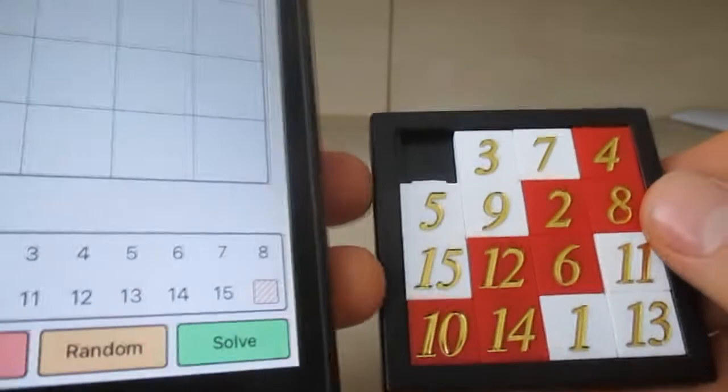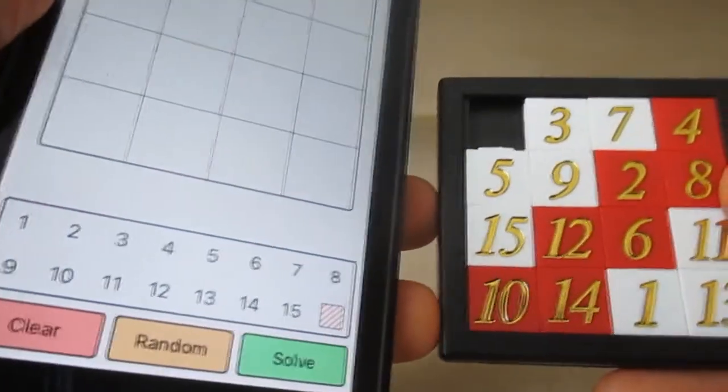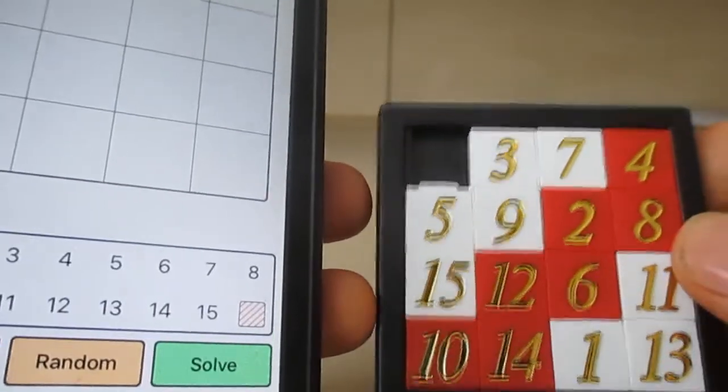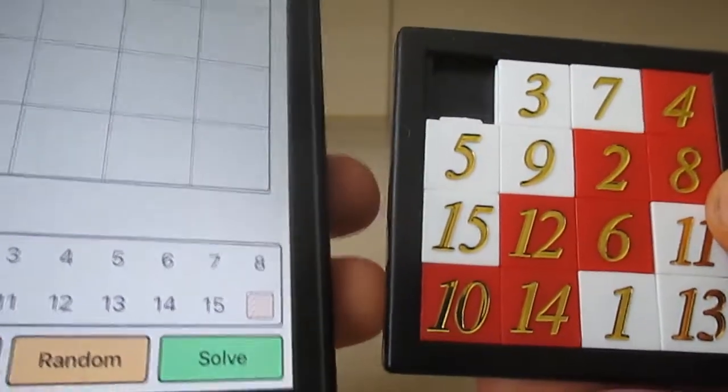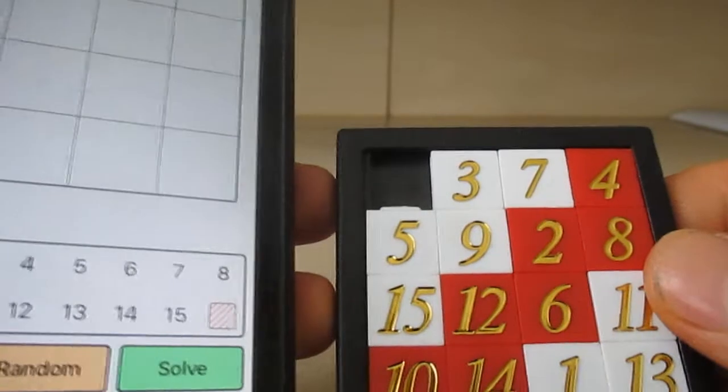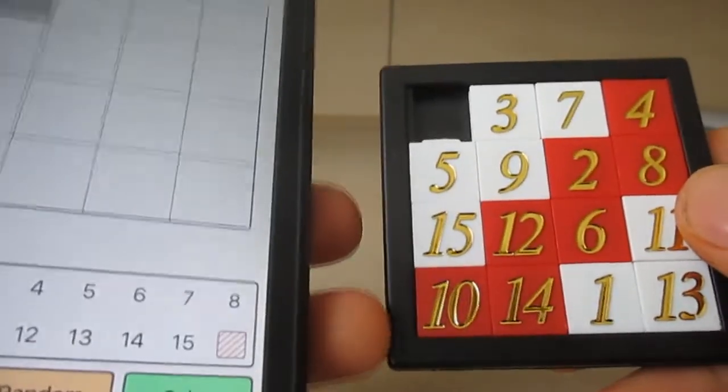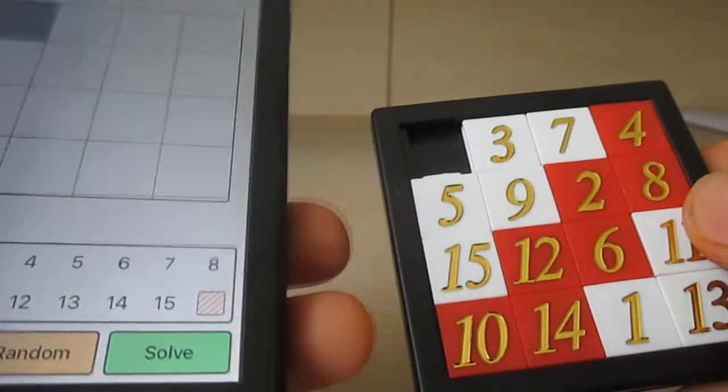What you're going to do is enter the numbers the way you have on your 15 puzzle. So in my case it's like so, so I'm just going to enter all the numbers in.